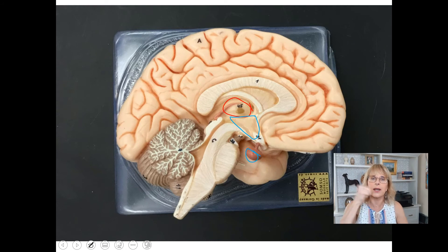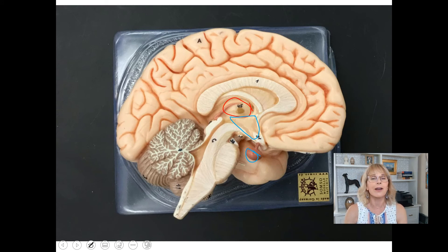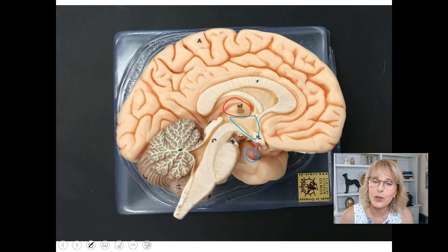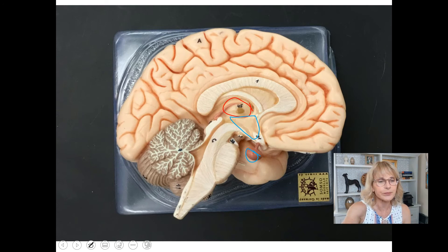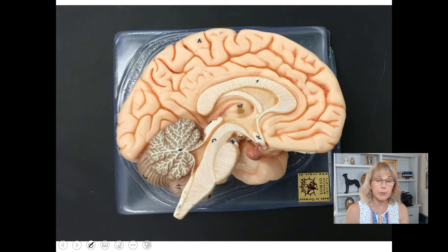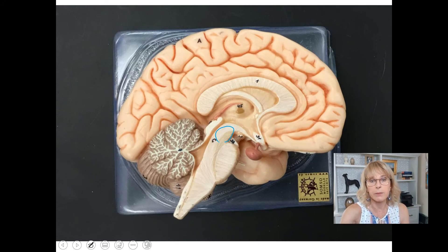This thing that kind of looks like a speed bag at a boxing gym is your pituitary gland. The pituitary gland sits in a special part of the brain called the sella turcica. The brainstem has three main parts: the midbrain, the pons, and the medulla oblongata.